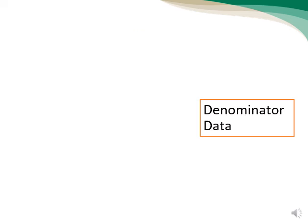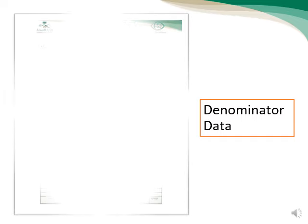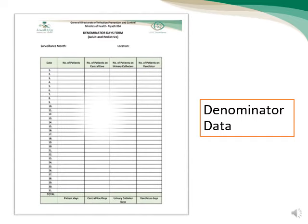Patient days and urinary catheter days should be collected at the same time every day for each location performing surveillance, to ensure that different collection methods do not result in device days being more than patient days. Here is a screenshot of the denominator data collection form, sourced from the GDIBC website.